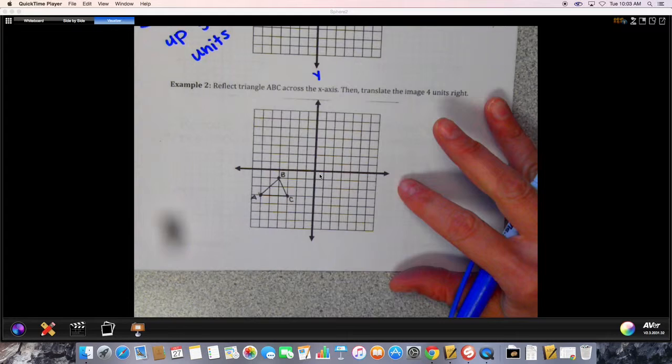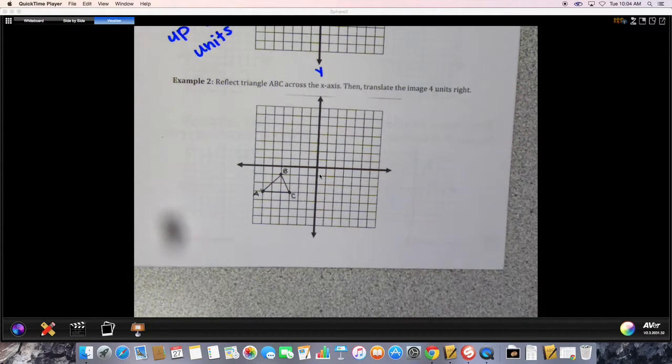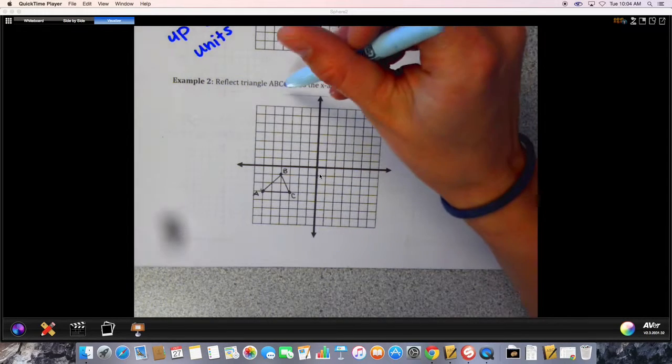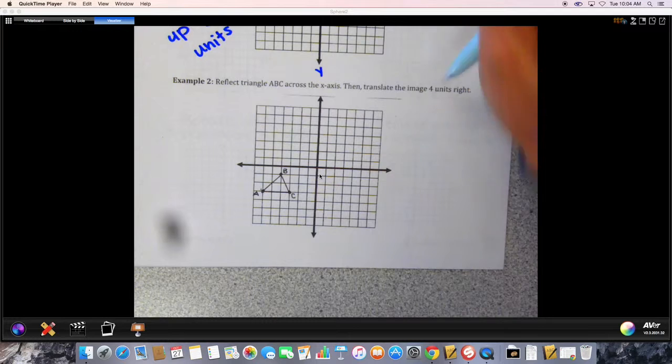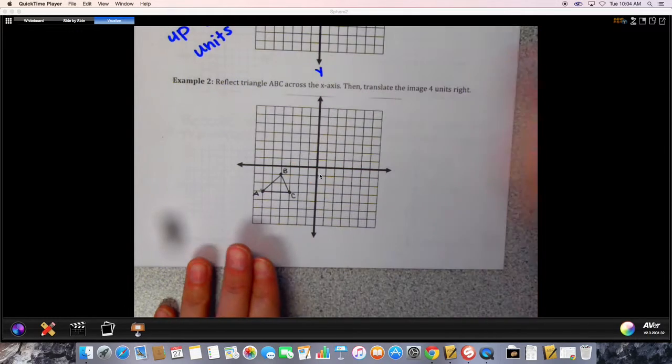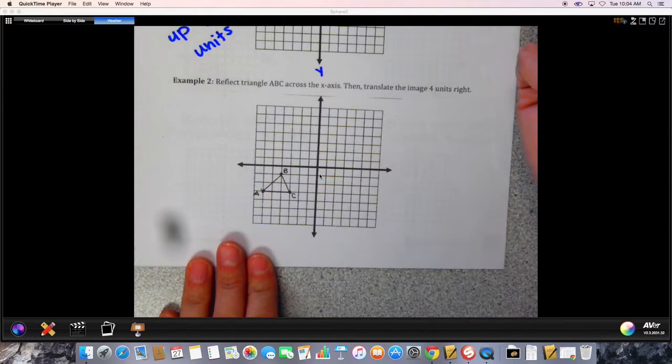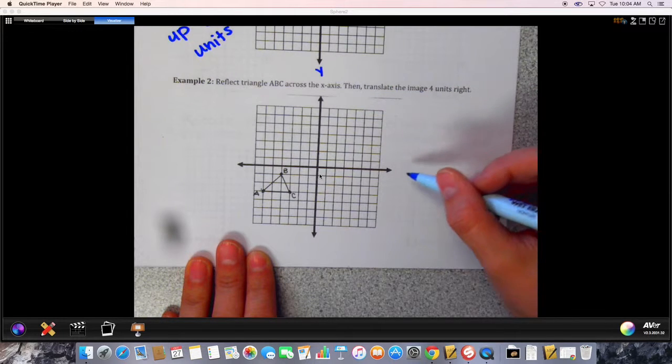The second part you do have to draw. So the other thing you'll have to do is you're going to have to actually perform the sequence of motions. So this says reflect triangle ABC across the x-axis, then translate the image four units right. So you just follow the directions in order - the order is going to matter here.